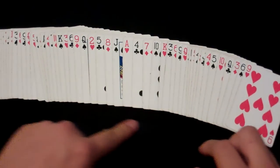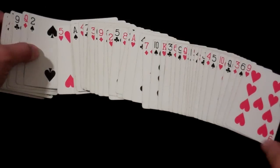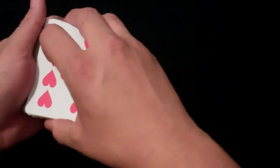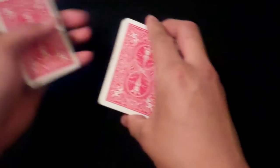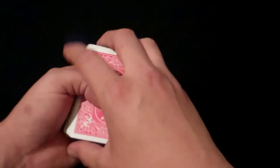What you want to do is spread through the cards and try to find any 2. We'll just say we find the 2 of spades. You want to get that card to the bottom. You can do a couple of false cuts here, as long as the 2 stays.